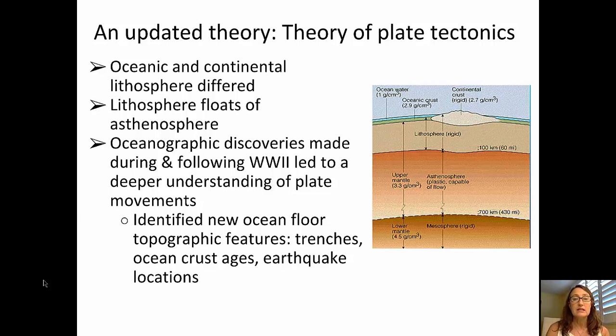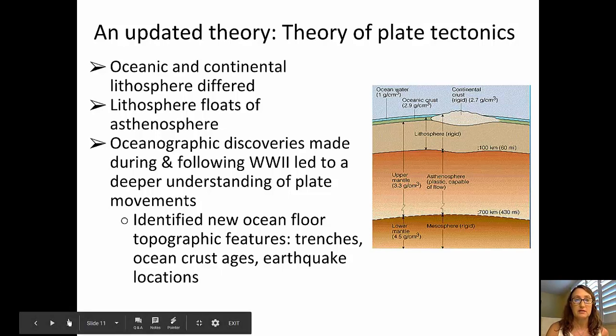So our understanding now is that we have the lithosphere, which is made up of the oceanic crust, the continental crust, and the uppermost portion of the mantle, and that is less dense, and so it rides above or floats on the asthenosphere, which is another portion of the mantle that is beneath the lithosphere. The asthenosphere is more dense, it flows like a plastic, and it is involved in the convection which is part of plate tectonics.